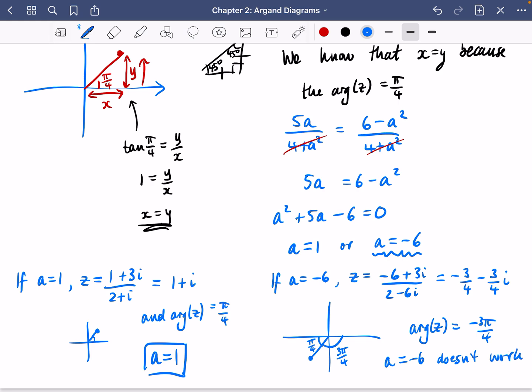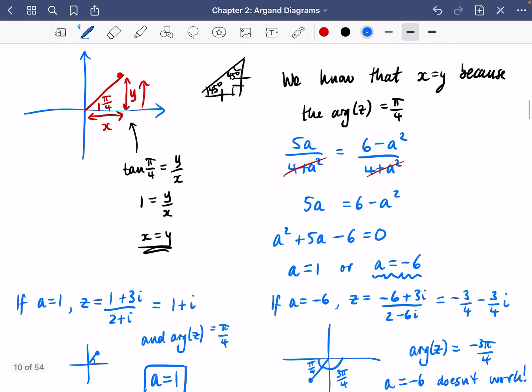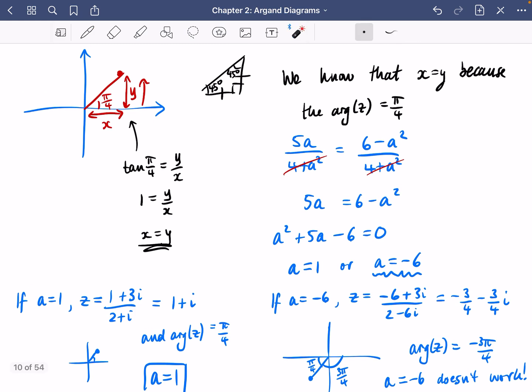So a equals minus 6 doesn't work. So it's not a solution. The reason this has come up is because of the fact that when we do the tan of π over 4, we say that y and x are equal to each other. We still get y and x being equal to each other. But instead of them being in this first quadrant up here, they've actually ended up in this third quadrant down here, meaning that we don't have this match.